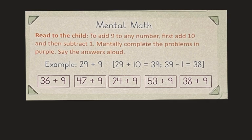So look at these problems and I want you to mentally answer them. Let's start with thirty-six plus nine. Think about adding ten to thirty-six and then subtracting one from that and you should get forty-five.